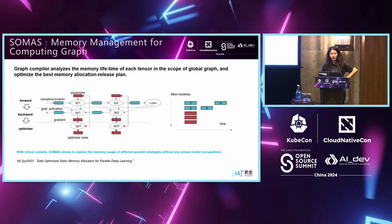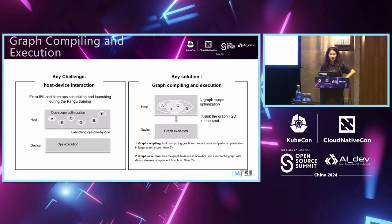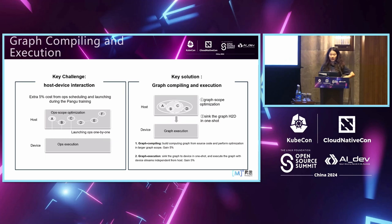SOMAS is our memory management system for the computing graph. The framework controls the entire memory pool occupying all available memory by default. During compilation, it identifies the lifecycle of each tensor and allocates memory accordingly, enabling a globally optimized memory allocation and release plan for the entire training process. For graph compilation and execution, our previous approach launched small operators sequentially one by one, wasting time in host-device interaction. The key solution is to build the computing graph from source code and sync the entire graph to the device in one go, gaining back approximately 5% improvement.